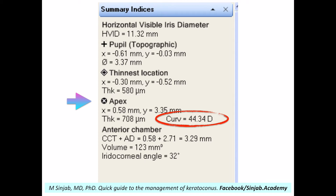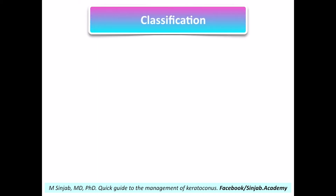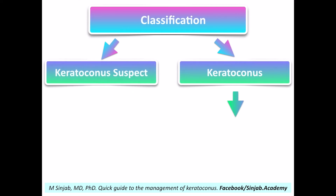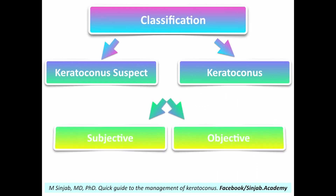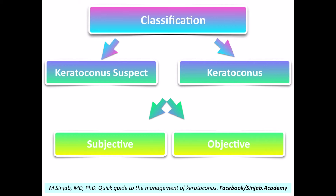Coming to the classification of keratoconus, there are two goals. The main goal nowadays is trying to develop new indices with high sensitivity and specificity to detect subclinical cases of keratoconus, or what is called pre-stage keratoconus. The other goal is to grade keratoconus and other ectatic corneal disorders in terms of the best management modality option. In both cases, the classifications are either subjective or objective.